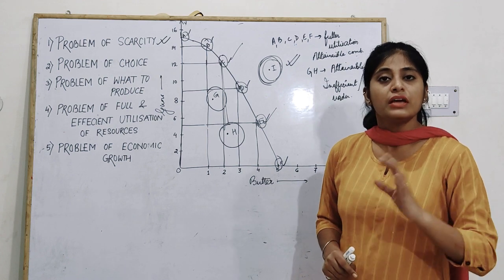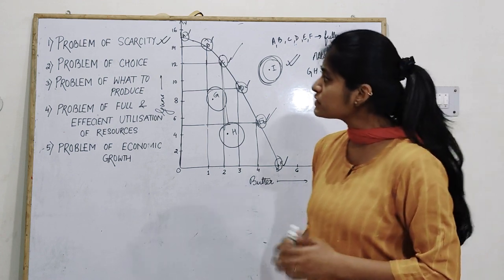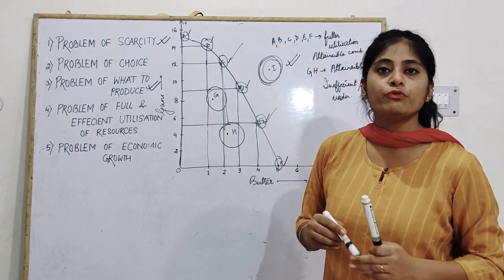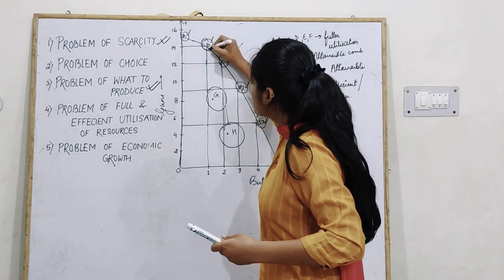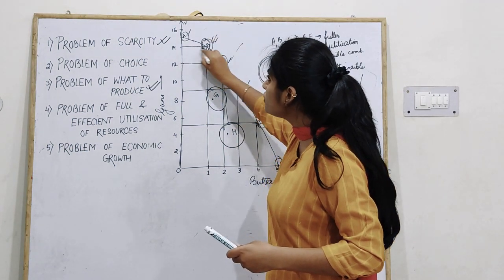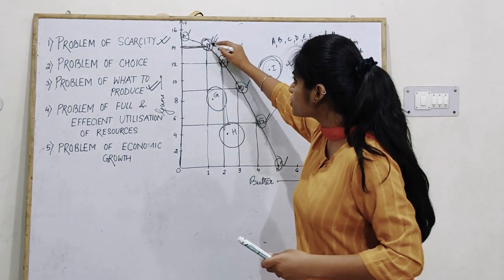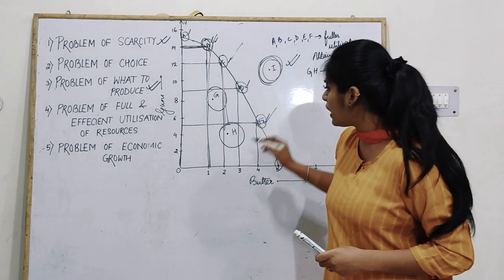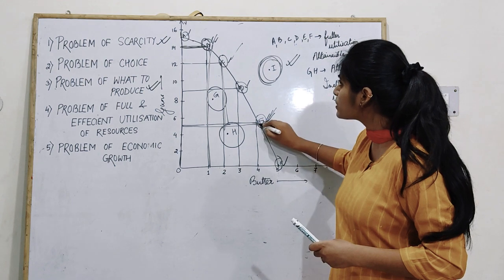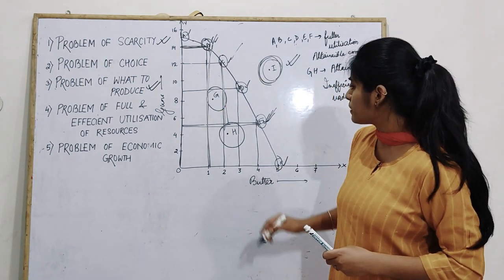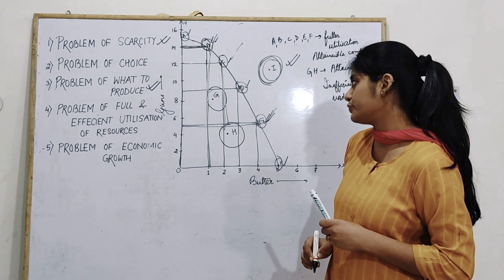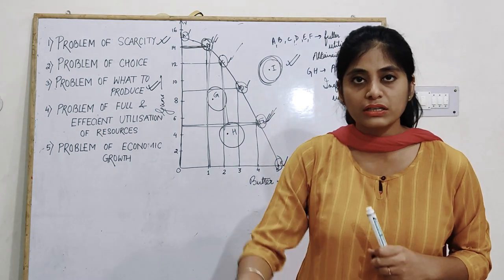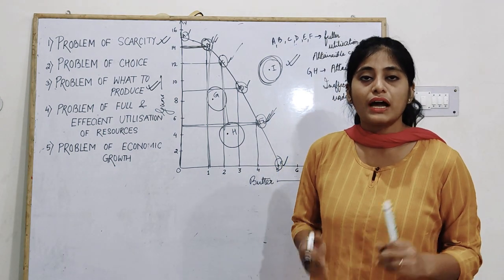Next is the problem of what to produce. For example, at point B, 14 units of guns are produced and only 1 unit of butter is produced. On the other hand, at point E, 5 units of guns are produced and 4 units of butter are produced. So you will decide whether to go for more butter or more guns, and choose the corresponding point accordingly.